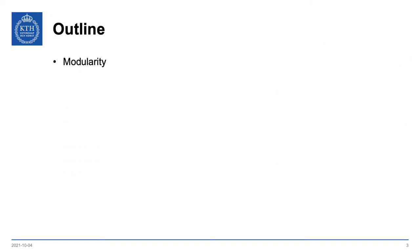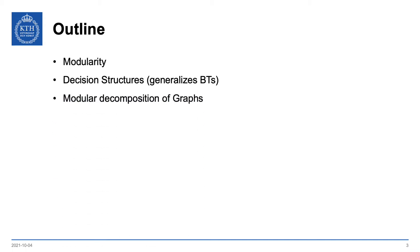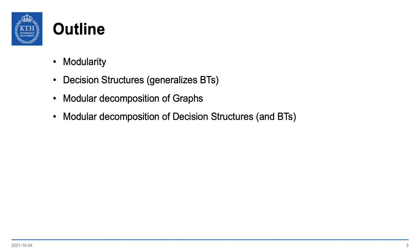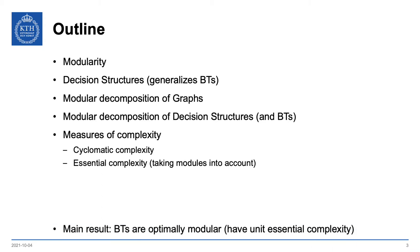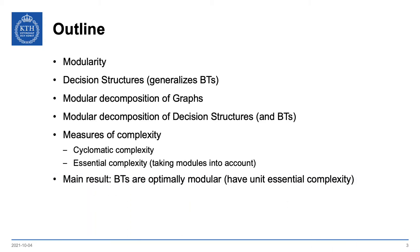The outline of this video is that we're going to talk about modularity. We're going to talk about decision structures, which is something that generalizes behavior trees. We're going to look at modular decompositions of graphs and of decision structures, and hence also of behavior trees. We're going to look at two measures of complexity: cyclomatic complexity and essential complexity, where the latter takes the modules into account. The main result is that behavior trees are optimally modular in the sense of having unit essential complexity.